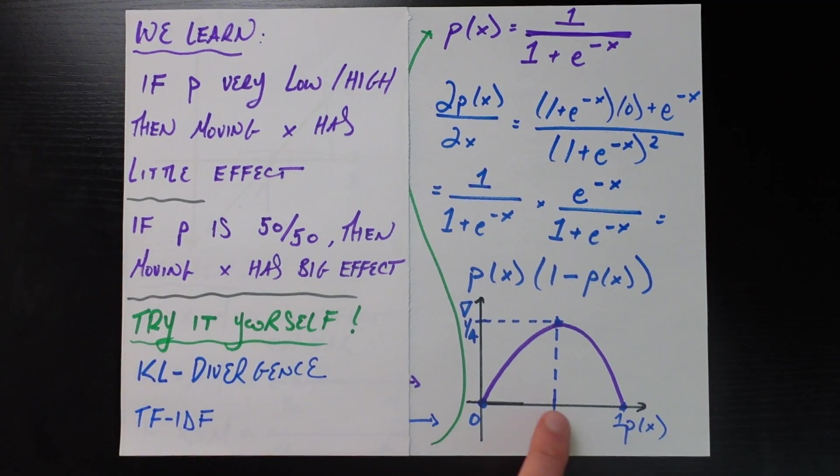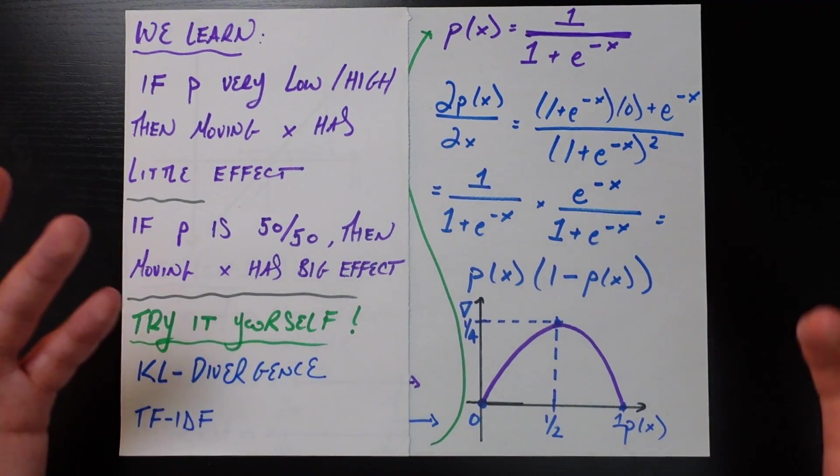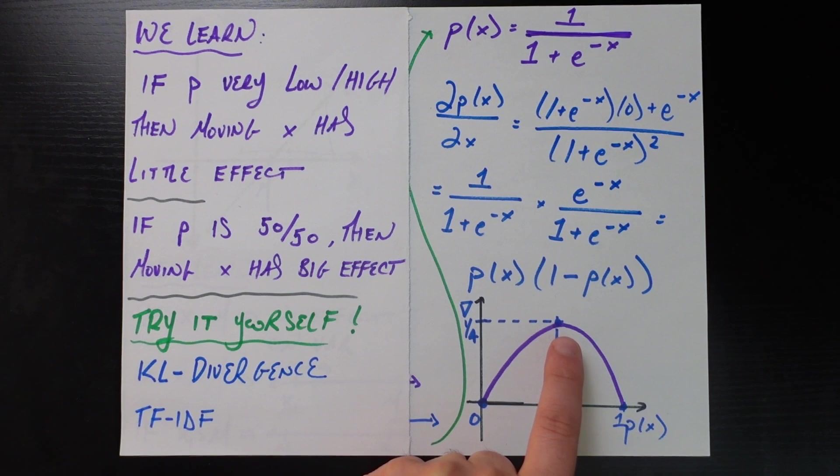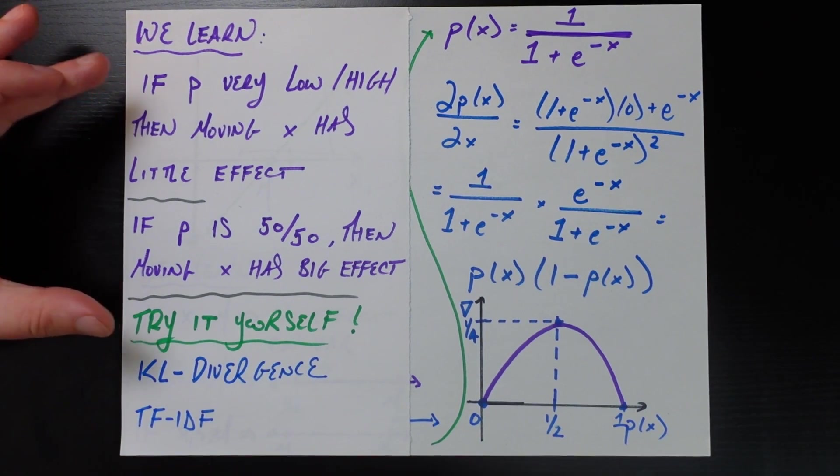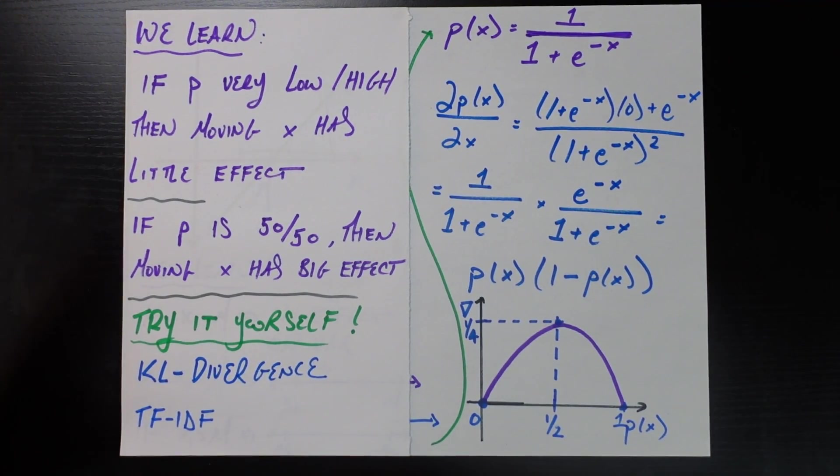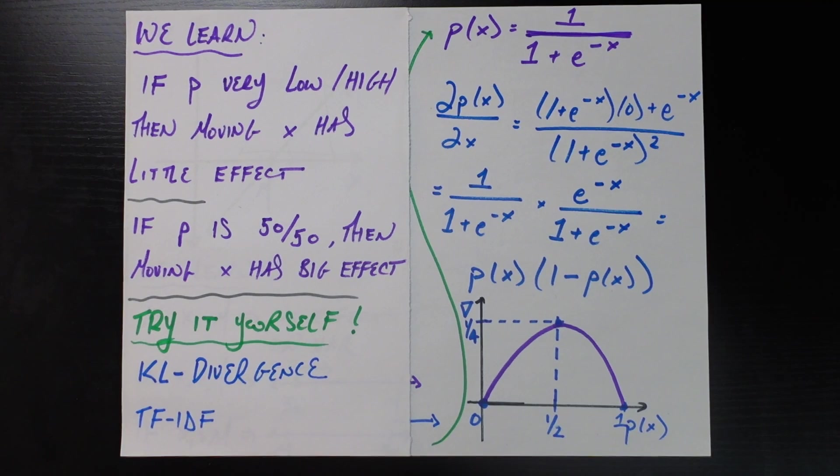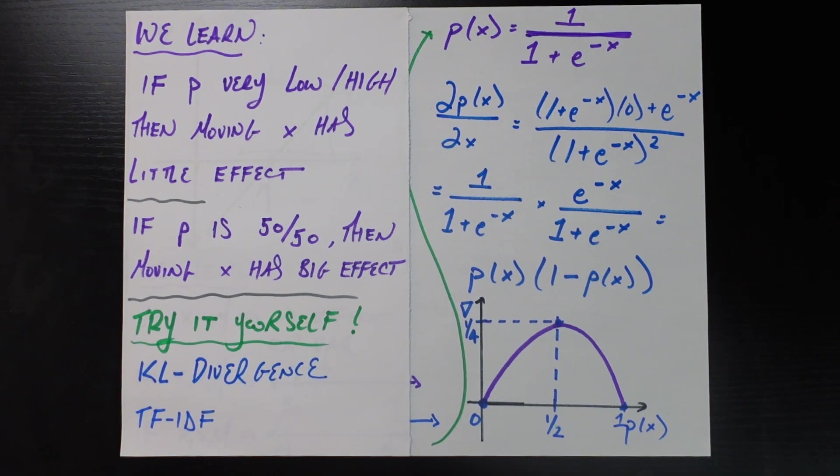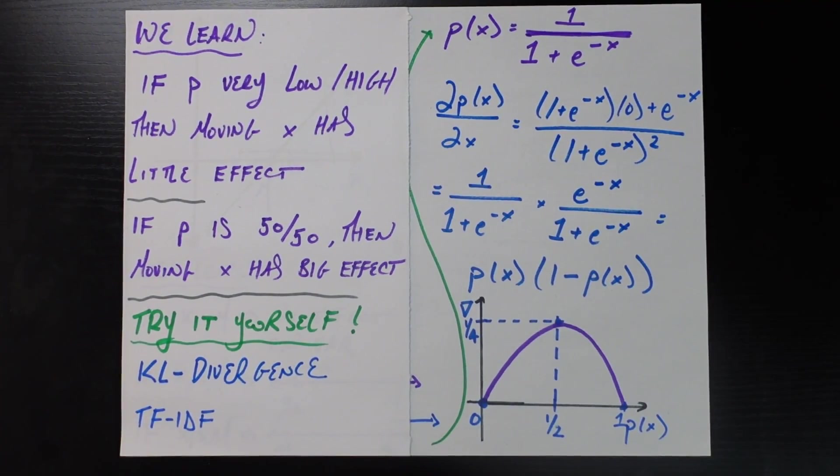And this whole story does kind of make sense, because if you think about trying to predict the probability something's going to happen based on some feature x, if your prediction of that probability is already really close to impossible, or already really close to extremely likely, then changing your input feature by a little bit is not going to change your mind that much. It's not like you're going to go from 0 to 0.25 all of a sudden. They're very sticky at the ends, is what this story is telling us, according to this sigmoid form.